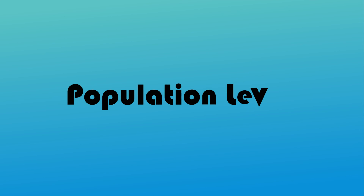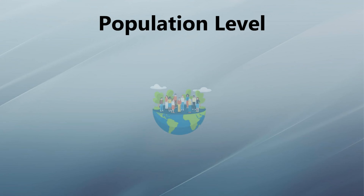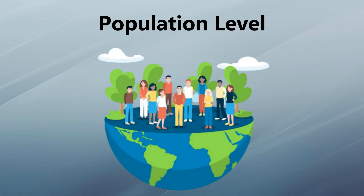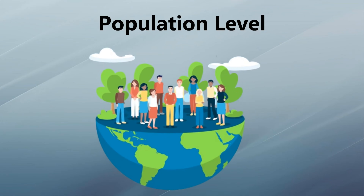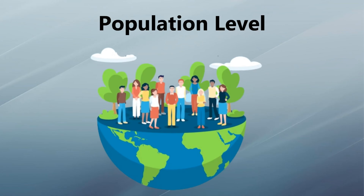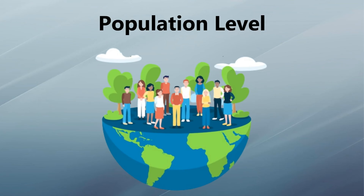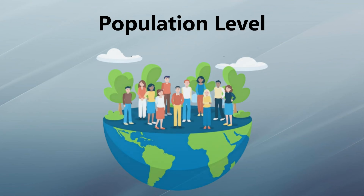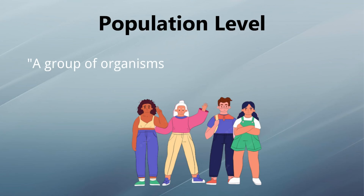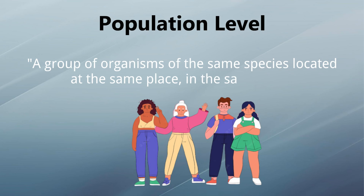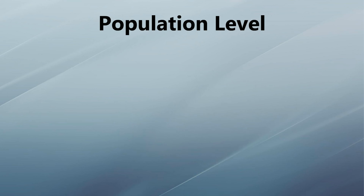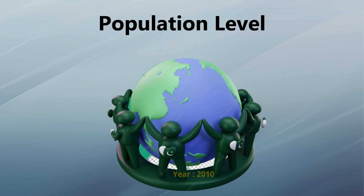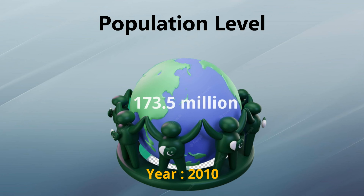The population level is a study of interactions among the members of the same species living in the same habitat. A population is defined as a group of organisms of the same species located at the same place at the same time. For example, the human population in Pakistan in 2010 comprised 173.5 million individuals.